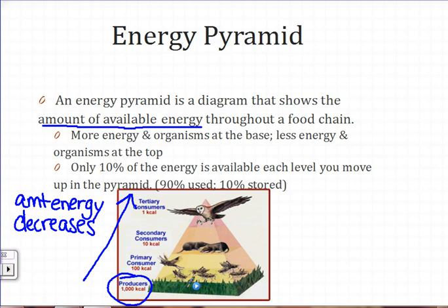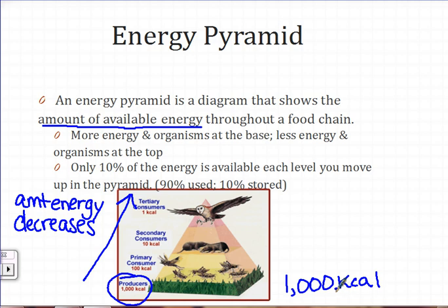So only 10% of the energy at our grass — producer level — is available for our primary consumers, our grasshoppers. If there are 1,000 kilocalories available at the producer level, you move the decimal over one place, leaving 100 kilocalories available for the next level. Only 10% of those kilocalories are available for the next level up, which makes it 10 kilocalories.